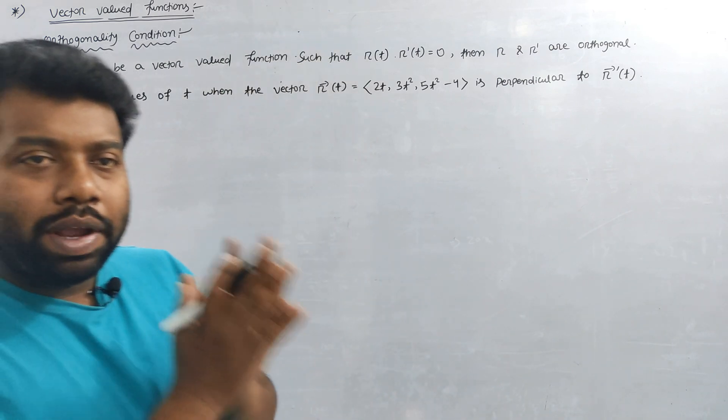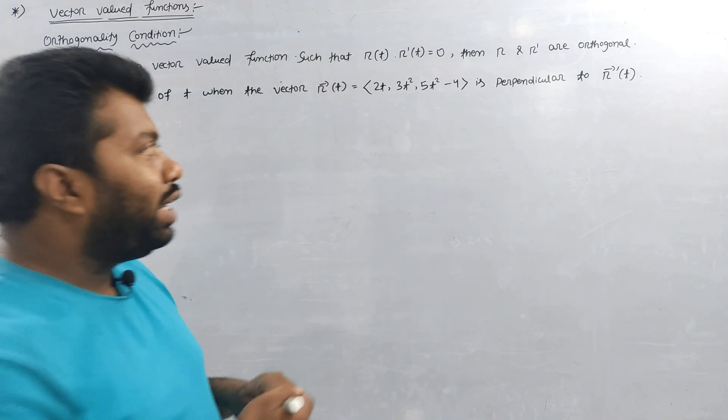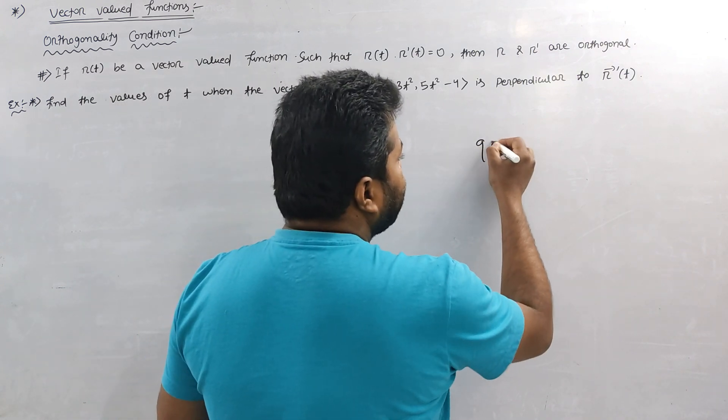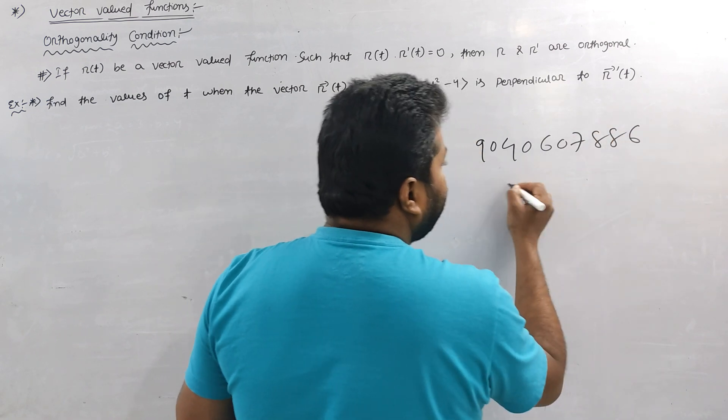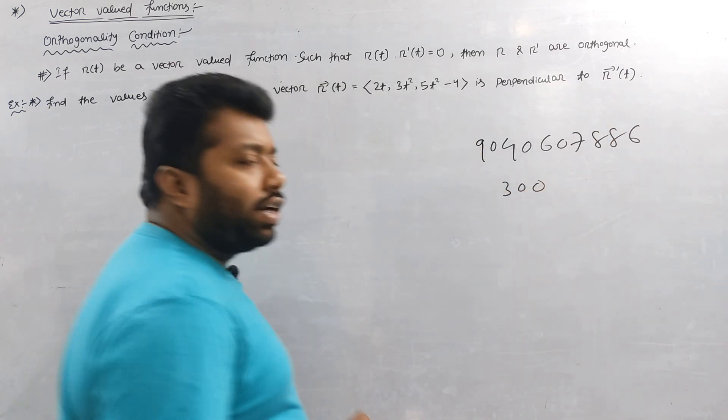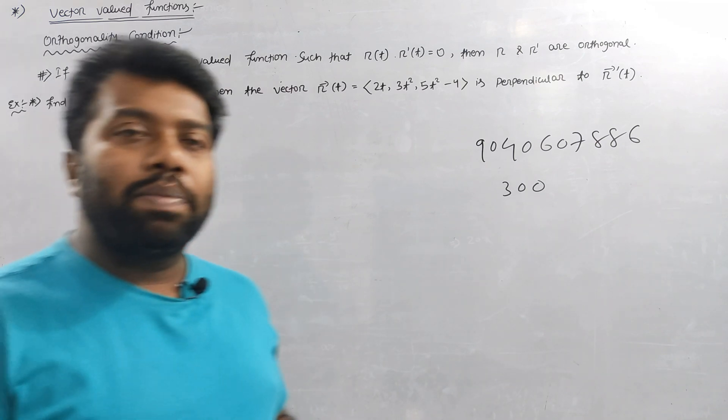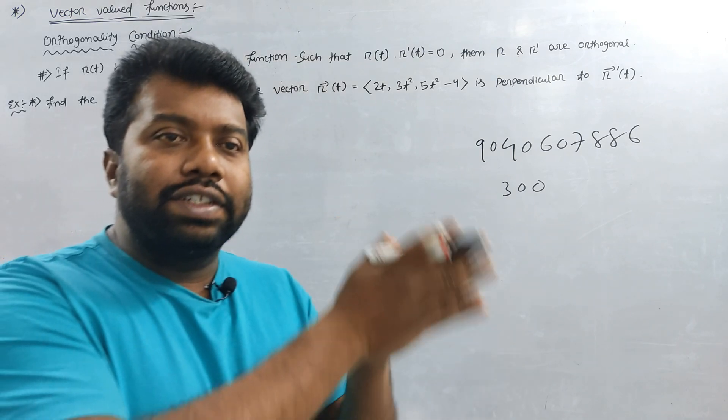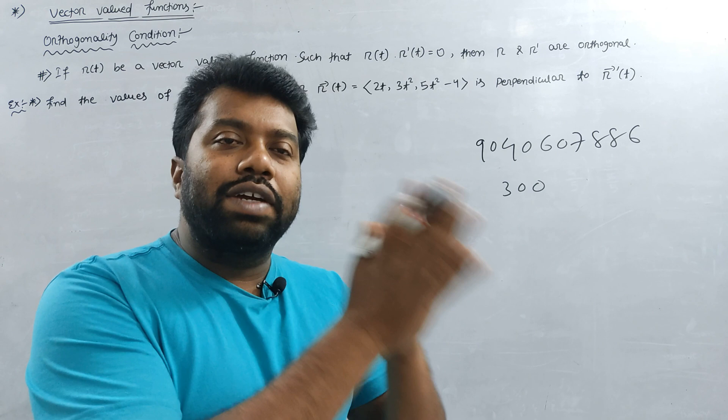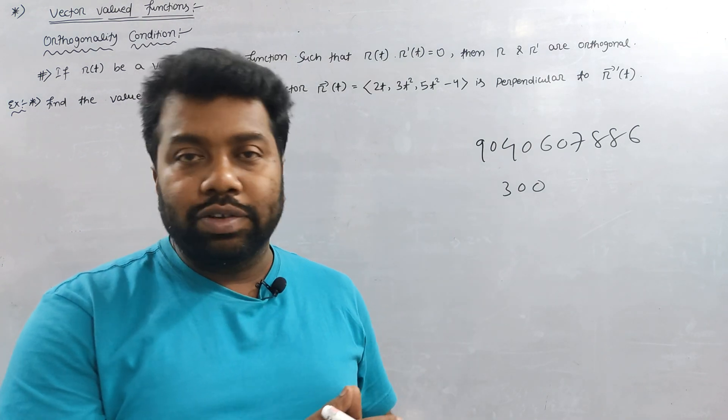So if you have to worry about the exam, you don't have to worry about your attention. Contact this number 9040607886. You have to study the paper 300 rupees and you have to complete the data paper 600 rupees. You can provide your attention to the class.